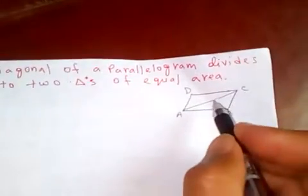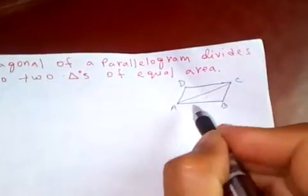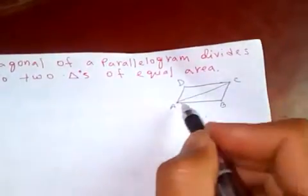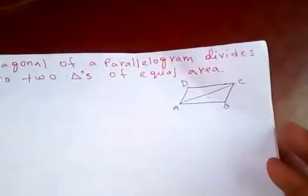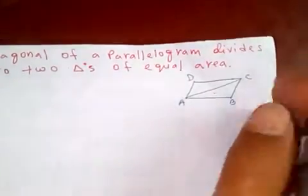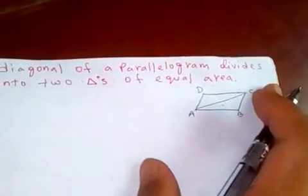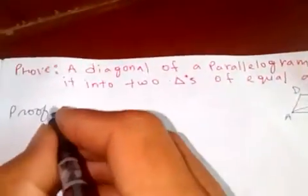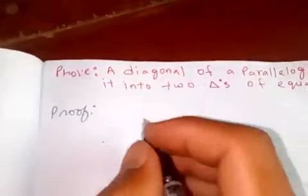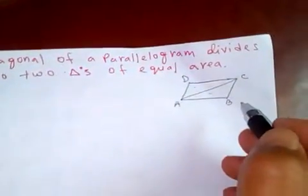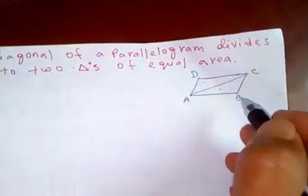What the question is asking is that these two triangles, ABC and ADC, are equal in area. That is what we are going to prove. Now, in any parallelogram we know